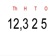Now, we will be looking at the number 12325. When rounding to the closest thousands, we need to look at our number in the hundreds column. If the number is between 0 and 4, we round down. If the number is between 5 and 9, we round up. In this case, our number is 3 and is between 0 and 4. Therefore, we round down.